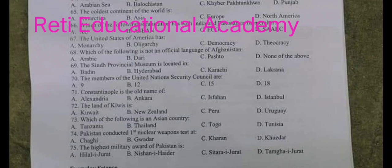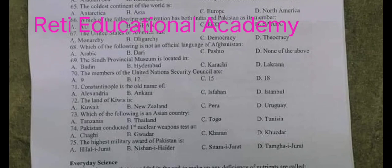Question number 70. The members of United Nations Security Council are: A. 9, B. 12, C. 15, D. 18. The correct option is C. 15 members — 5 permanent members and 10 non-permanent members, making a total of 15 members.